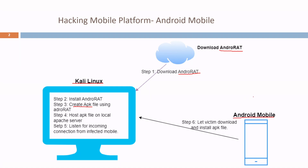Then I will be on my Android mobile. The victim will download the APK file and install it. As soon as the victim runs the APK file it will create a reverse connection on the Kali Linux. For that I have to actively listen for the incoming connection on my Kali Linux as step 5. In this way we can easily hack the Android mobile device.